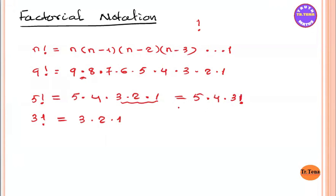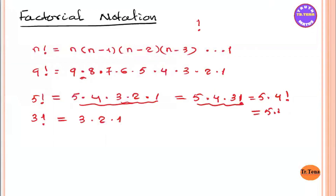Now, if you have 5 factorial, it will be 5 factorial. You pull up the 5 factorial. If you have 5 factorial, you will get 5 into 4 into 3 into 2 factorial. And that will be better.